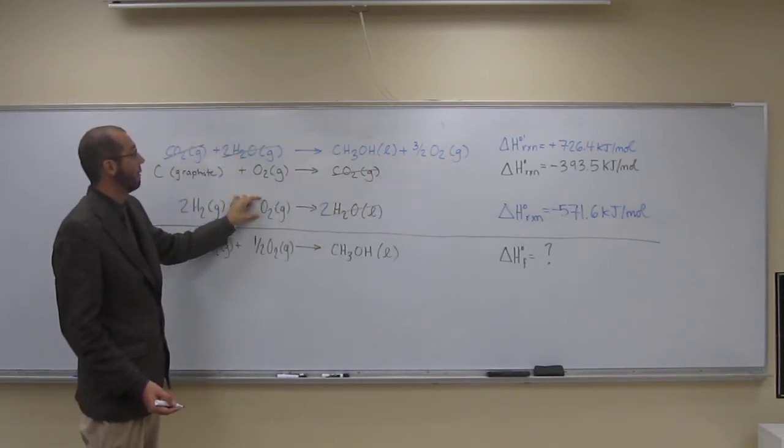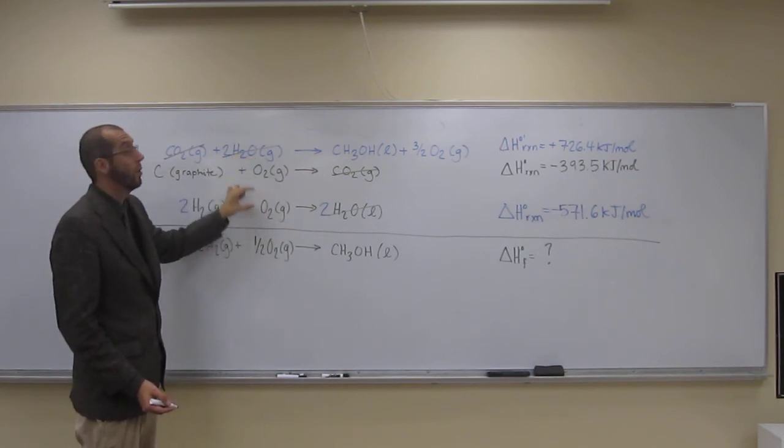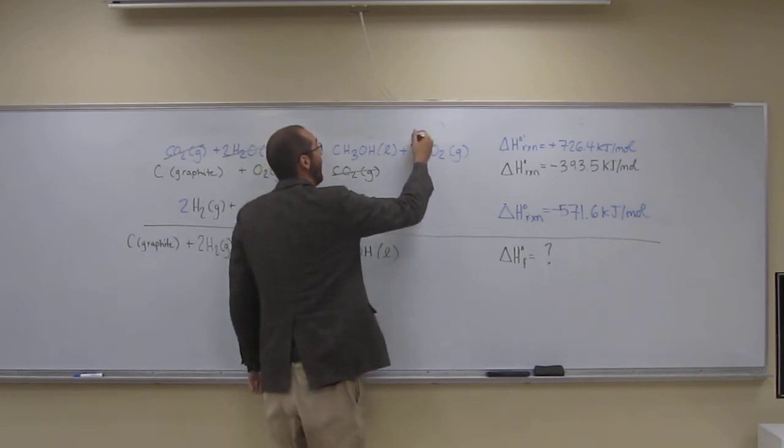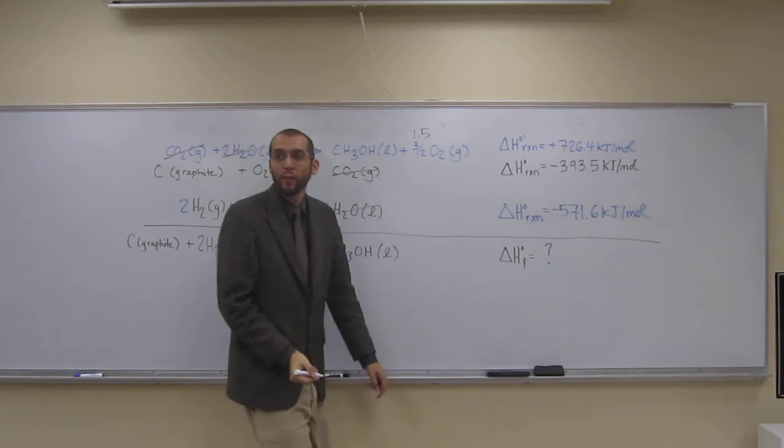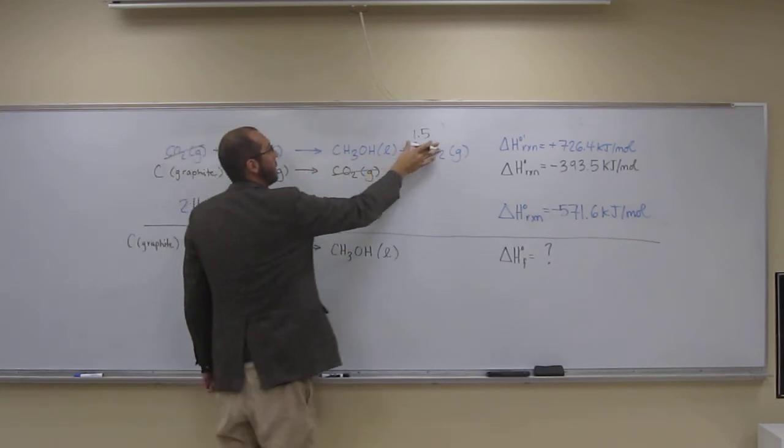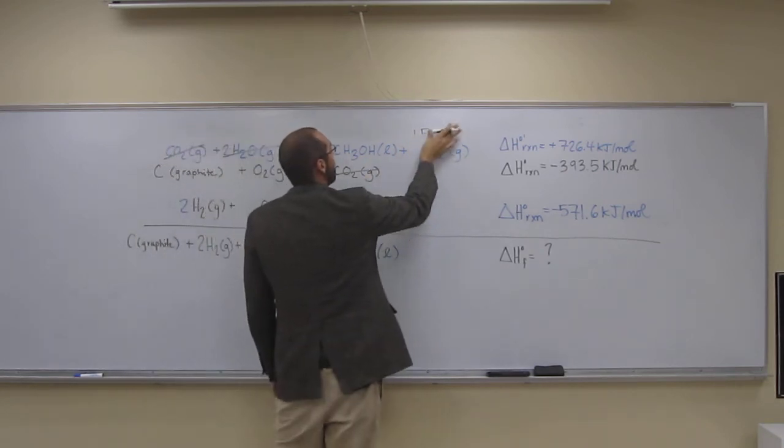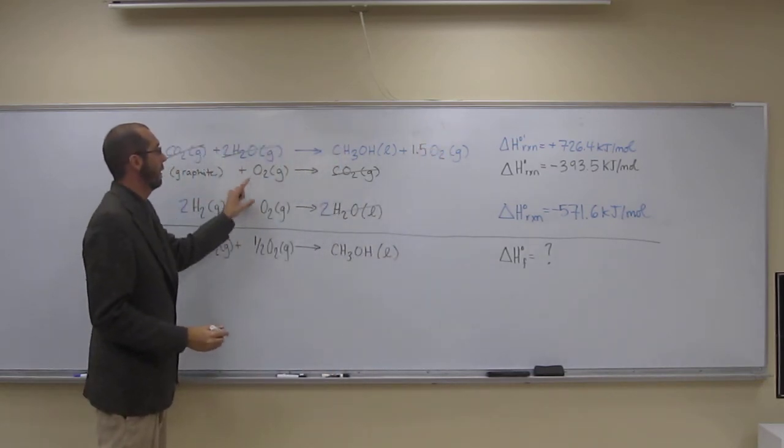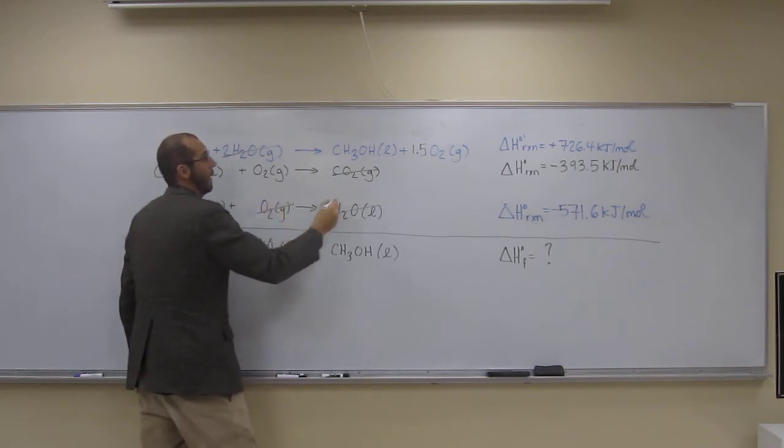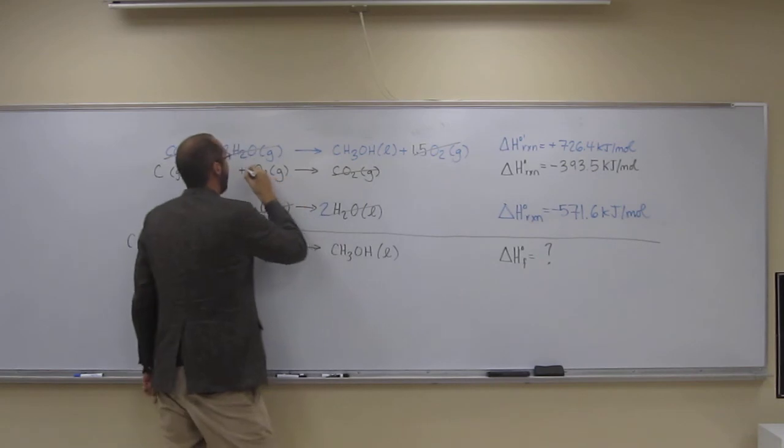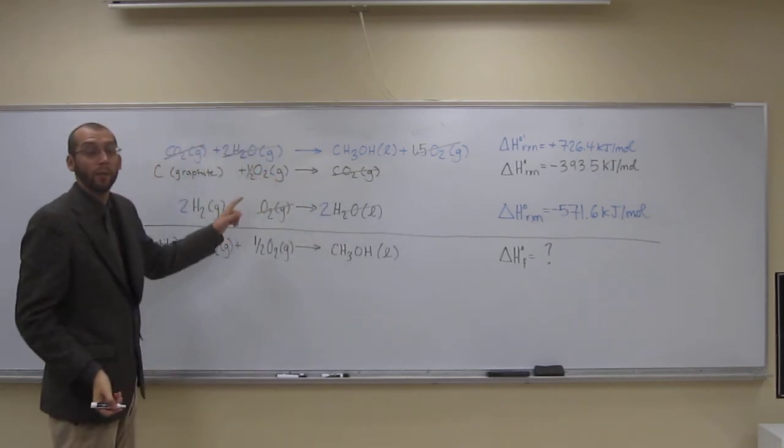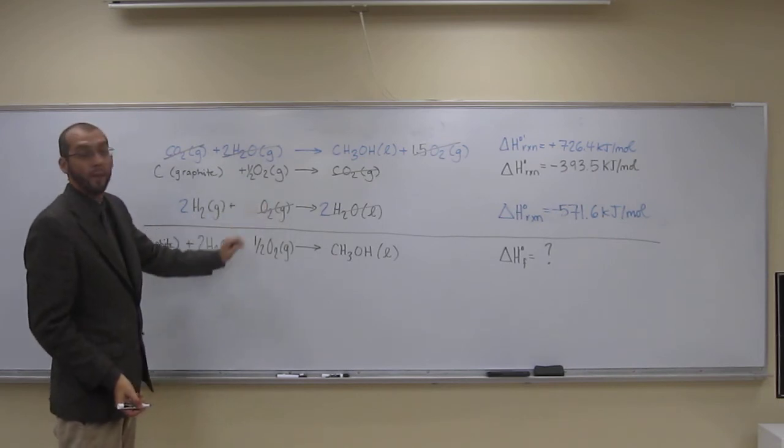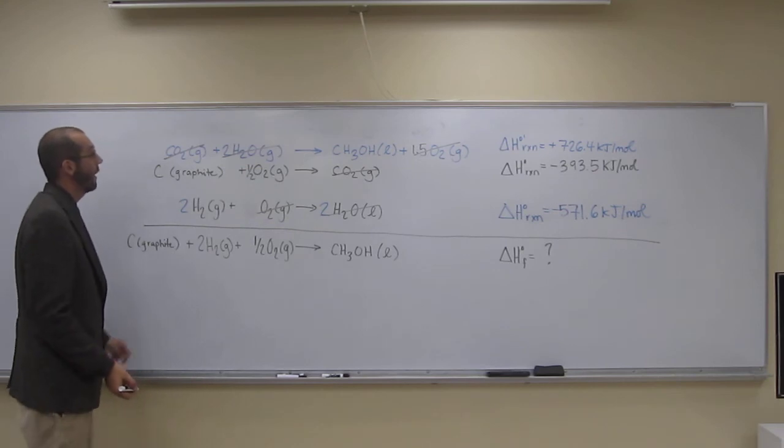So how many O2s do we have? Two. What is three halves? That's one and a half, one point five. So let's just write that up there, one point five, so it doesn't confuse us. So if we have two O2s here and one point five over there, what's going to happen? We're going to cancel one and cancel another half there. So we're going to have half an O2 there and none there.